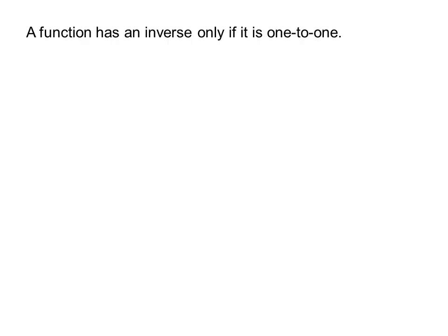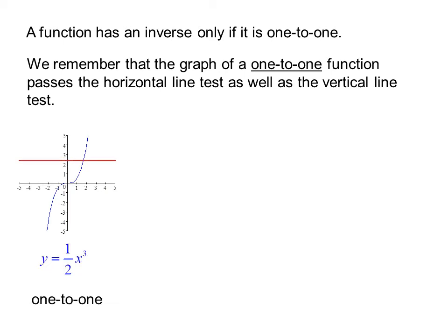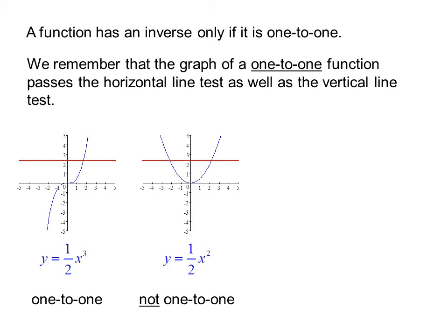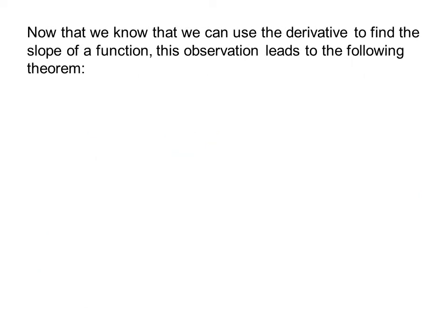A function has an inverse only if it is 1-to-1. The graph of a 1-to-1 function passes the horizontal line test as well as the vertical line test. For instance, y equals 1/2 x squared is not 1-to-1 because it fails the horizontal line test. If a graph fails the horizontal line test, it must have at least one point where the slope is 0.